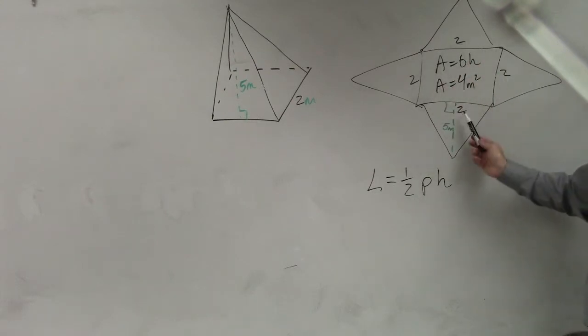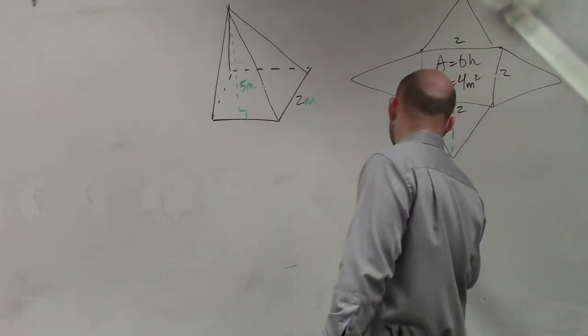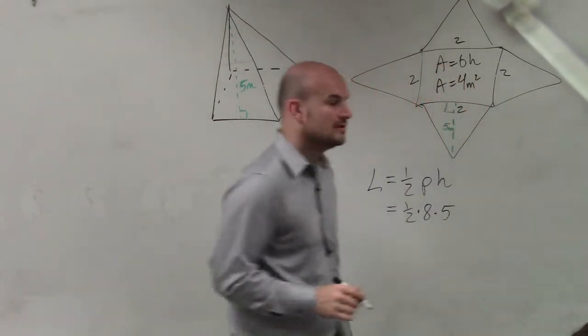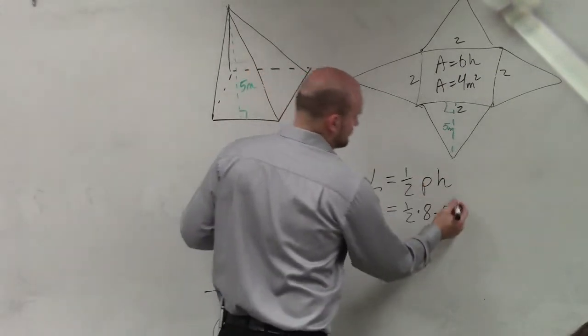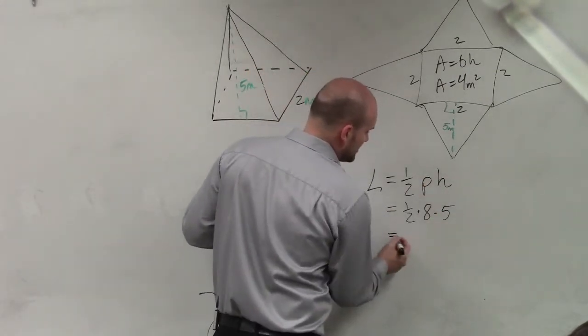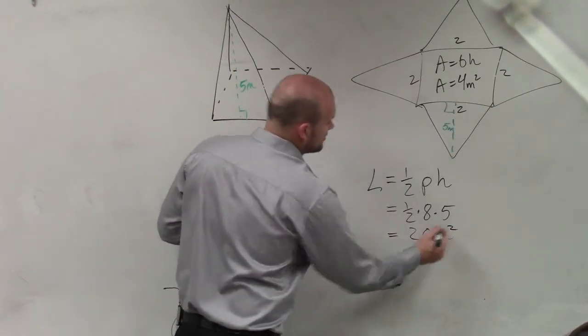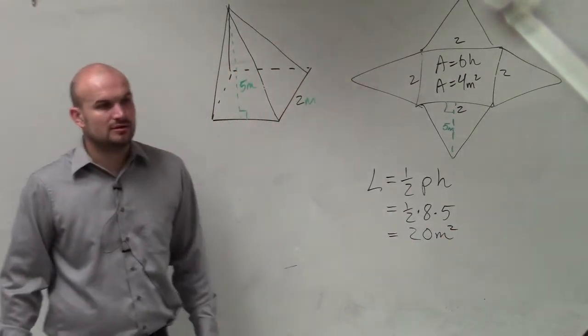2, 4, 6, 8. So 1 half times 8 times 5. And these are all in meters. So therefore, this is 20 meters squared is my lateral area.